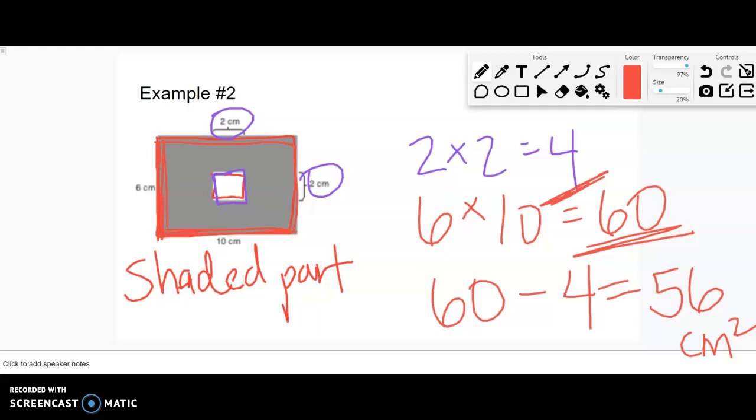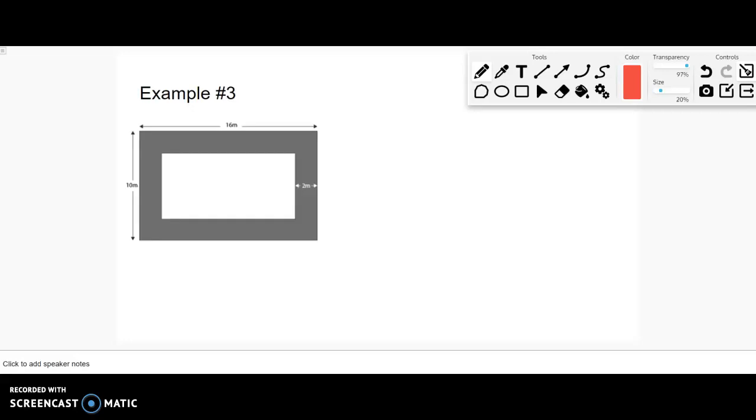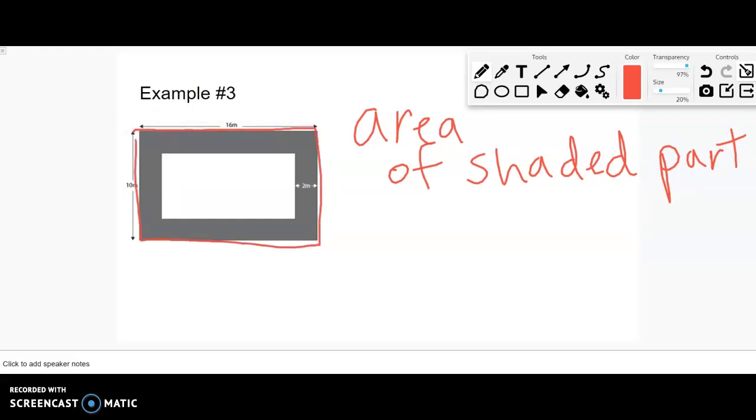Here's another one where I can figure out the area of the shaded part. I know this big rectangle - if it was all shaded I could figure it out: 16 and 10, so 16 times 10 is 160.